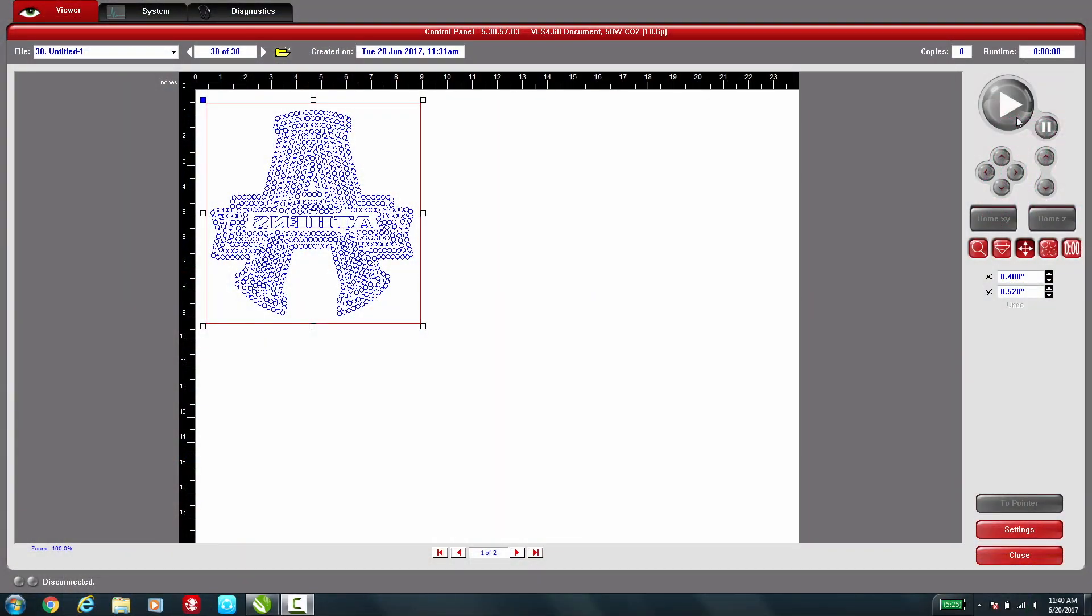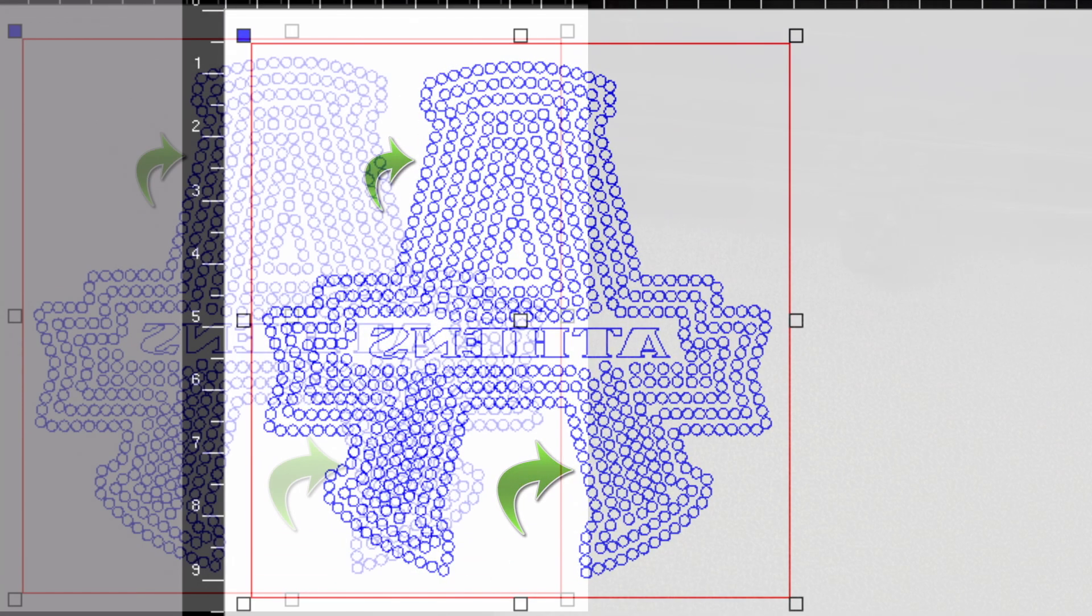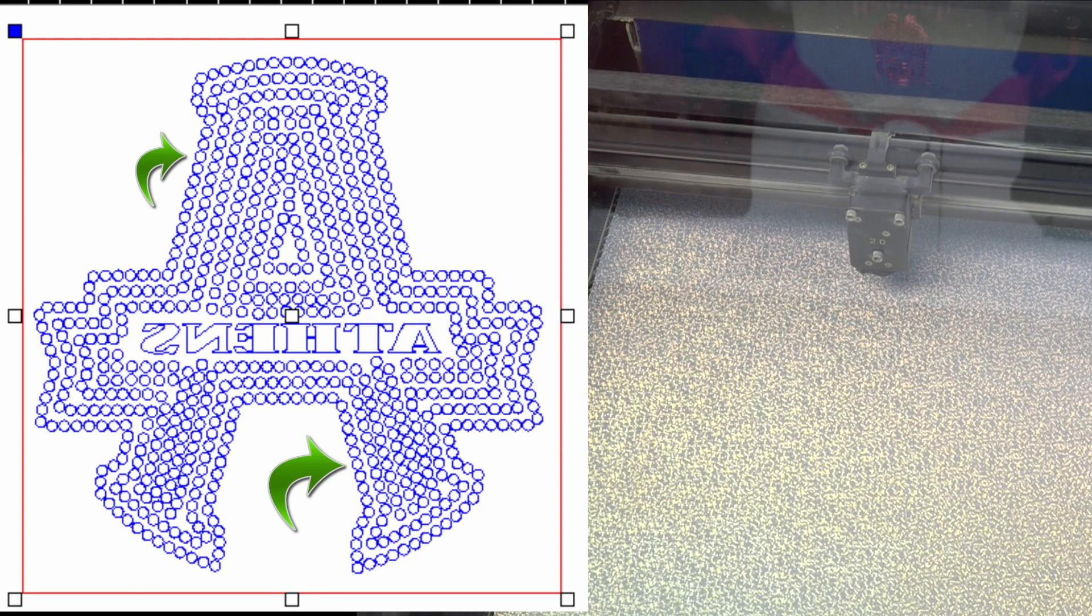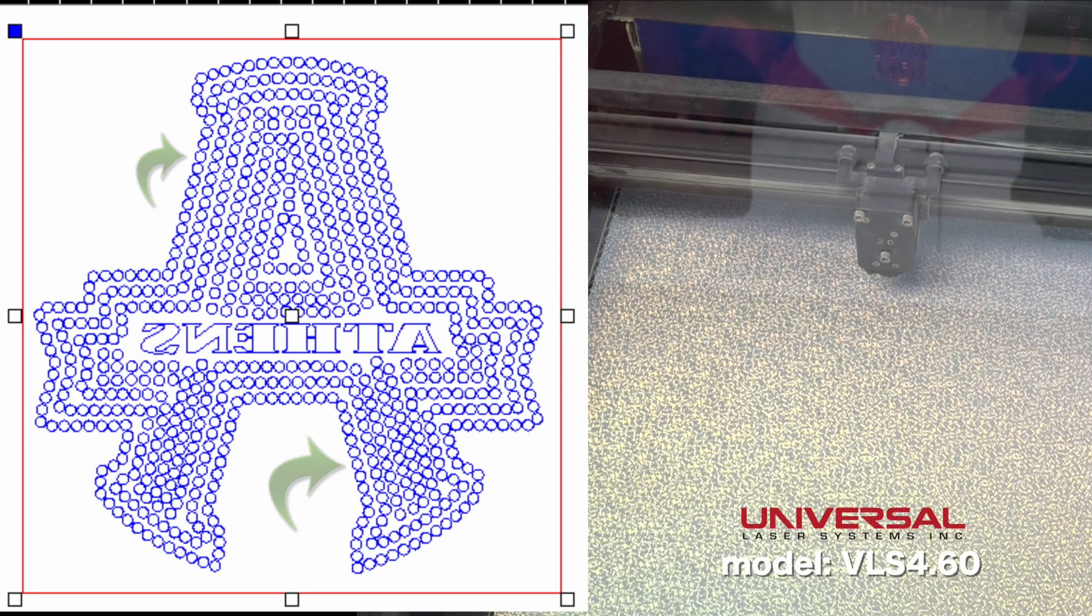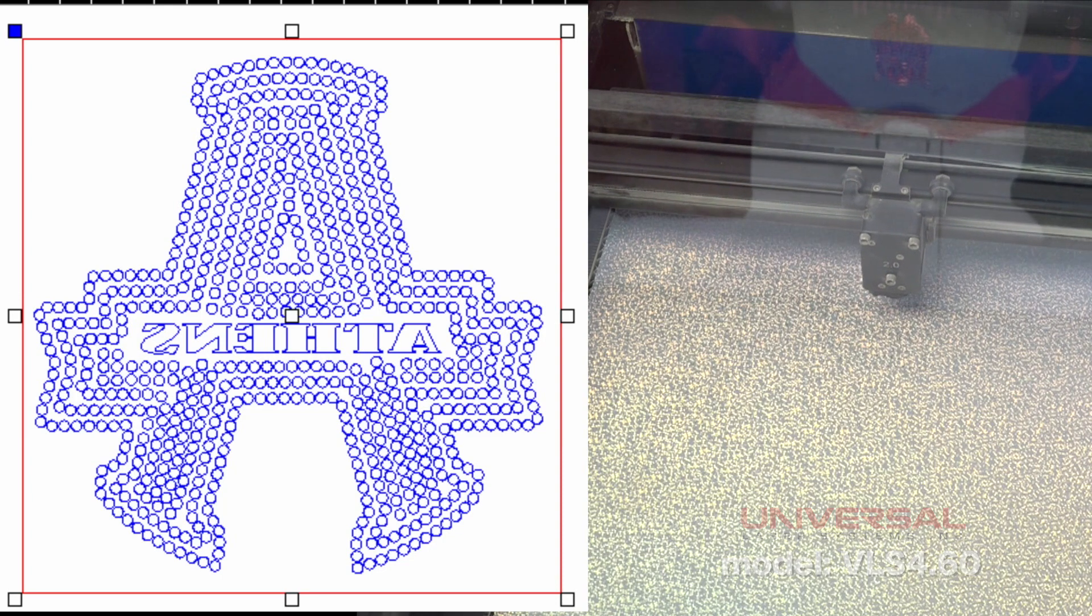Looking at our ULS software, we have imported our rhinestone design. You may notice the blue circles around our faux rhinestones. This is our vector engraving feature. This is to ensure a cut much like a traditional vinyl cutter, to where it cuts through the CAD-CUT material, but it does not puncture through the mylar carrier.